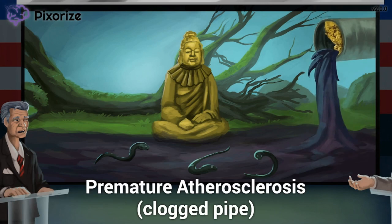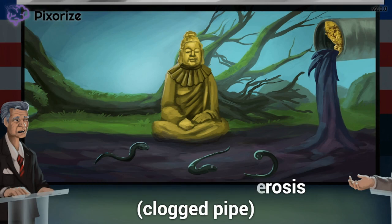Speaking of clogged pipes, familial dysbeta lipoproteinemia is characterized by premature atherosclerosis. Because of atherosclerosis, arteries get clogged up by fatty plaques — kind of like our pipe here. Patients with familial dysbeta lipoproteinemia have accelerated atherosclerosis and classically present with vascular disease at a young age. This is high yield, so be on the lookout for dysbeta lipoproteinemia whenever you see a heart attack in a younger patient.